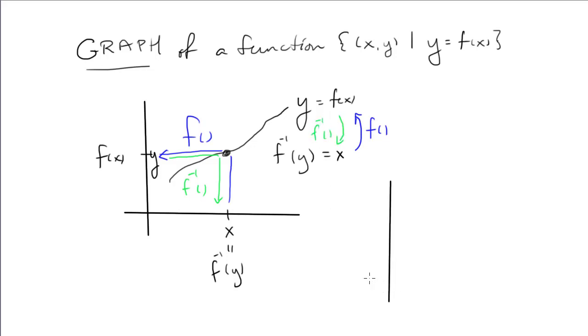For the graph of the inverse function, the input variable must be horizontal. The output variable is vertical. So I just flip the axes. There's the graph of the inverse function. It's the exact same points, the exact same everything. I just flip the axes. So now the action of the function is the right way for the graph.